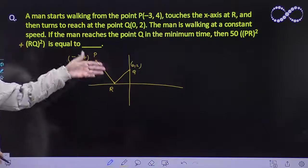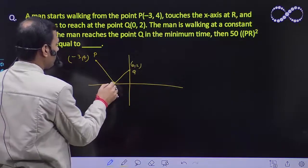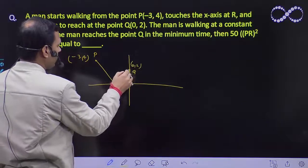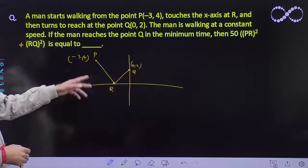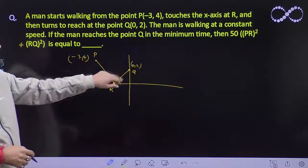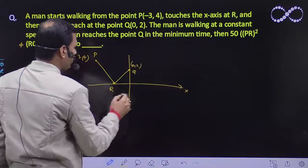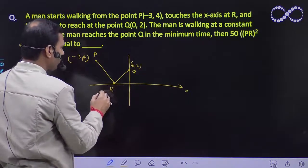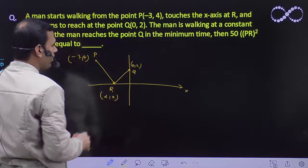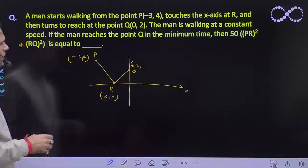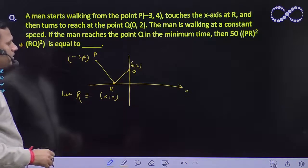For constant speed, minimum time means the path should be a straight line. Then 50 into PR² + RQ²... PR² + RQ² is distance. This is the x-axis here, so the y coordinate is 0. The coordinate of R will be (α, 0). Let's assume the coordinate of R equals (α, 0).